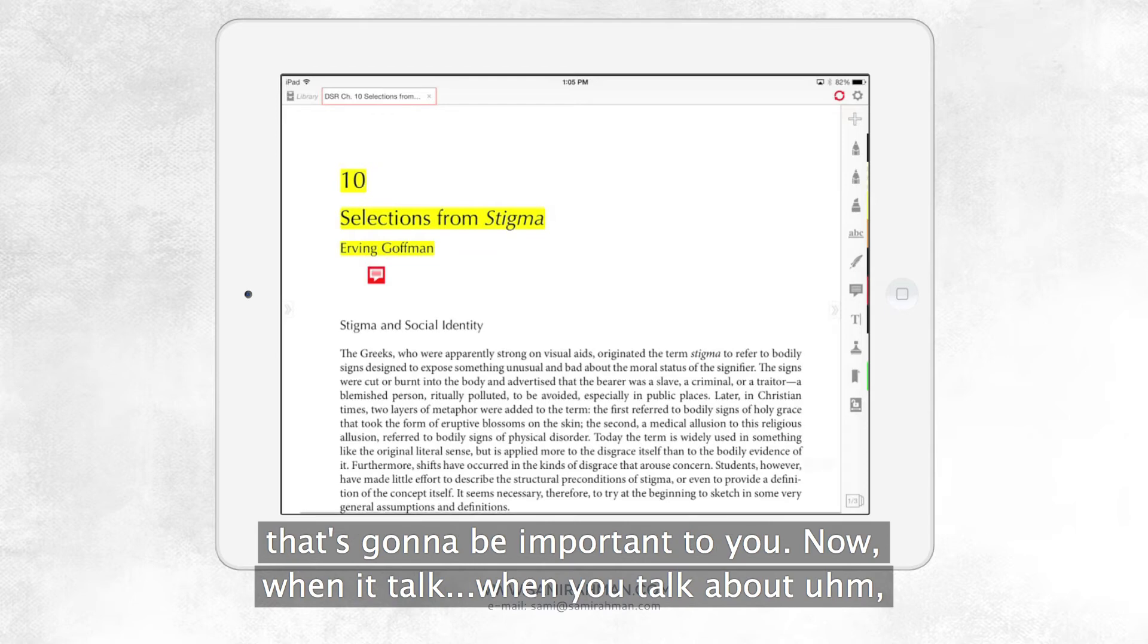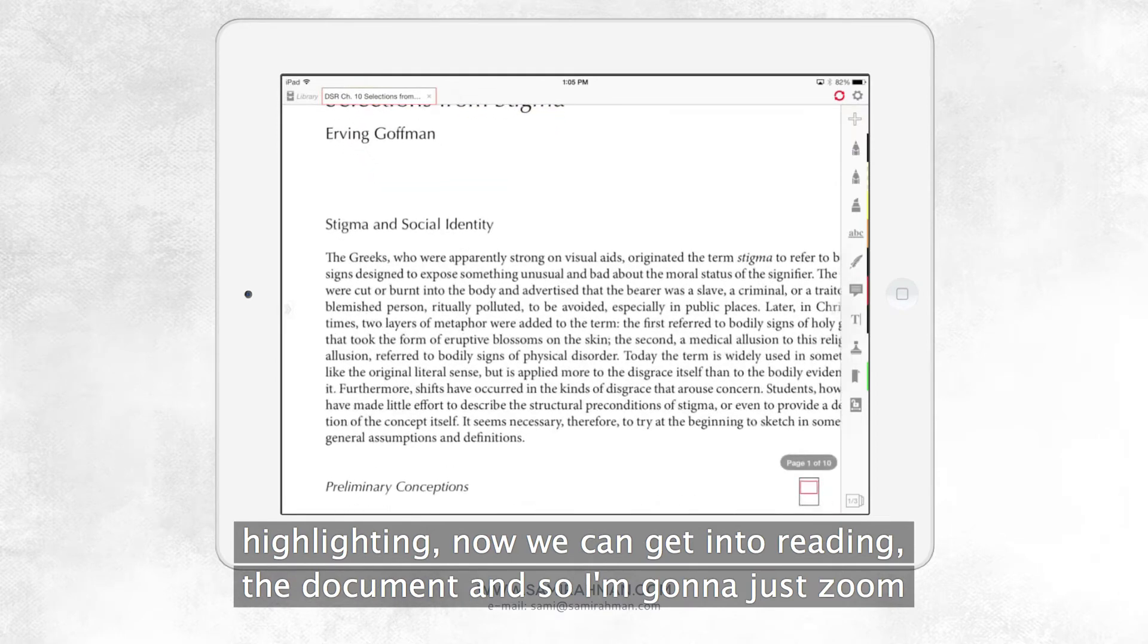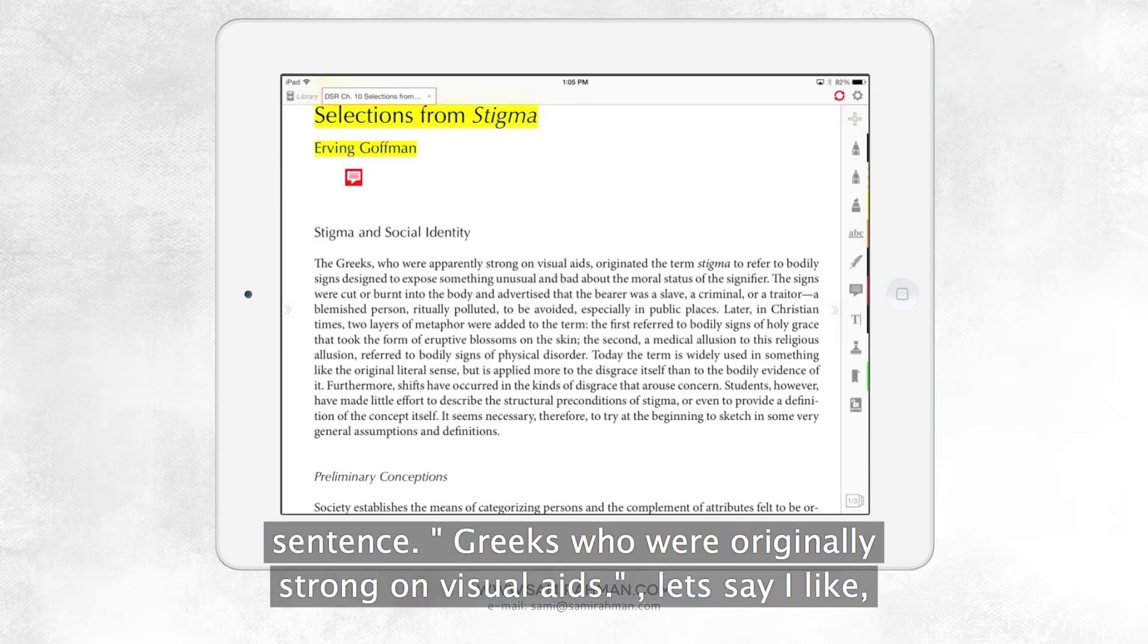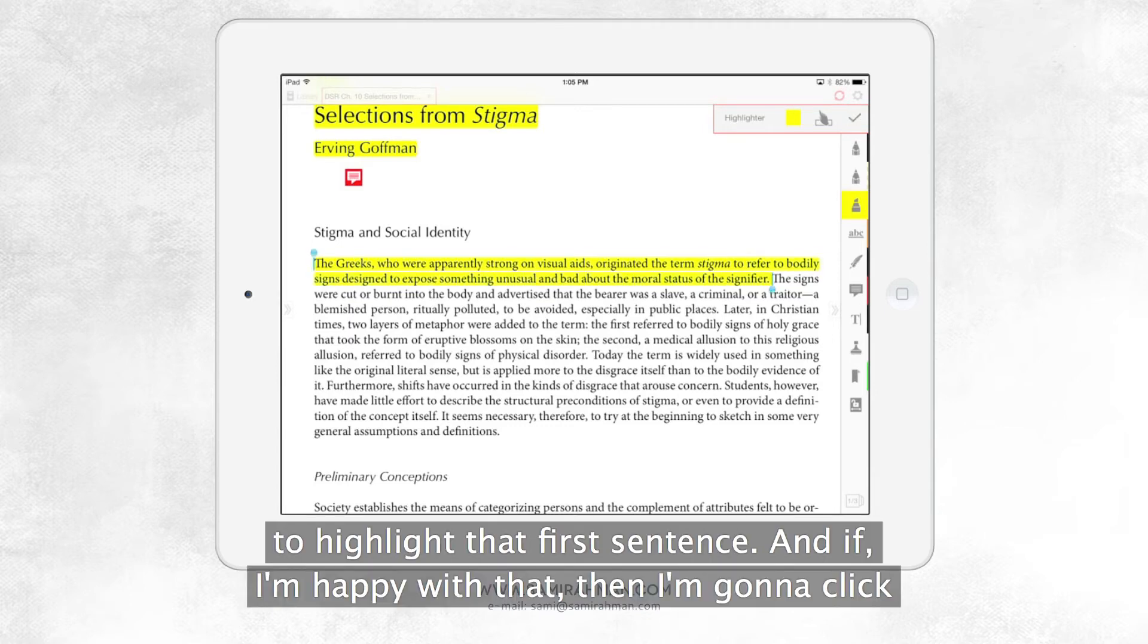Now when you talk about highlighting, now we can get into reading the document. And so I'm just going to zoom in here a little bit. And let's say that I like this sentence that says, the first sentence, Greeks who were originally strong on visual aids. Let's say I like that. I'm going to hit the highlighter. I'm going to keep it yellow. And I am just going to highlight that first sentence. And if I'm happy with that, then I'm going to click OK and I'll be done.